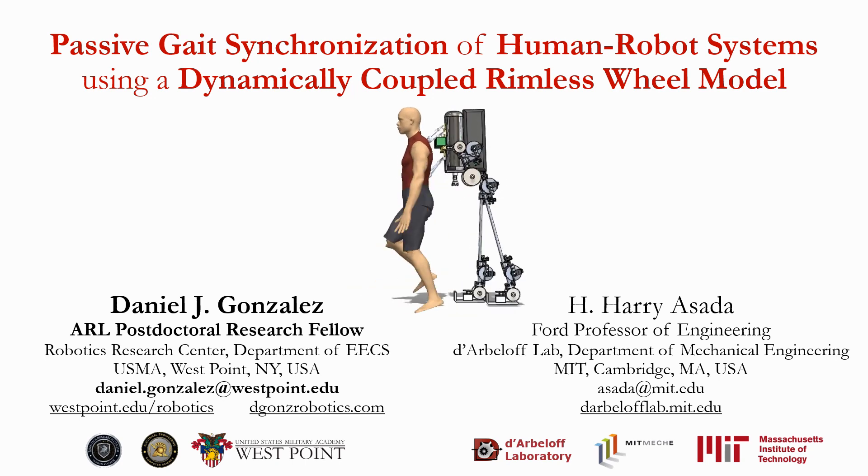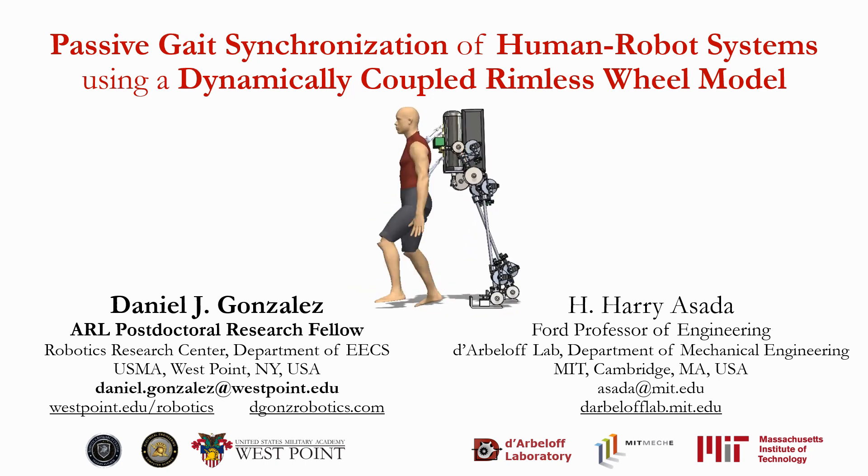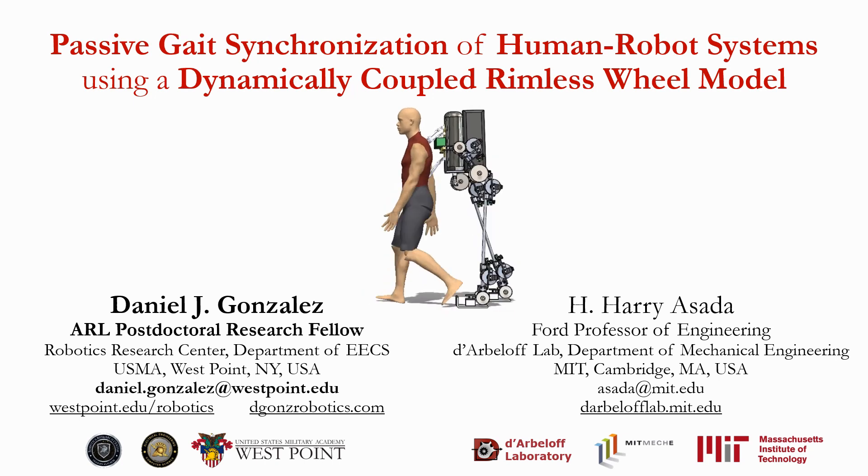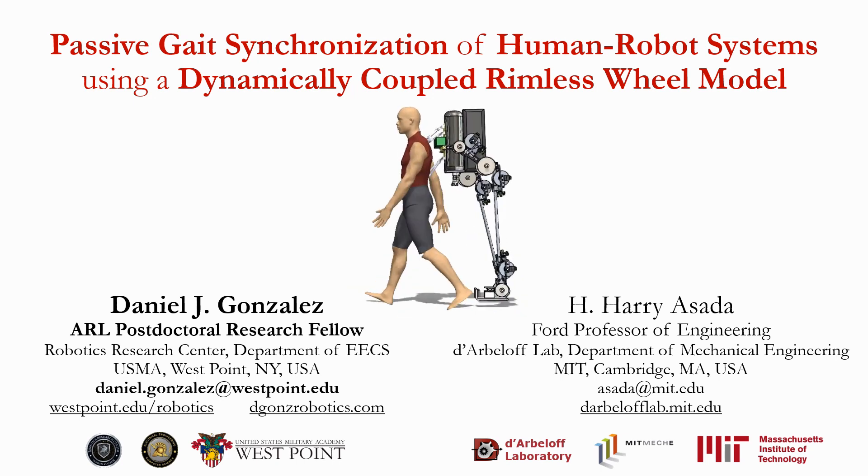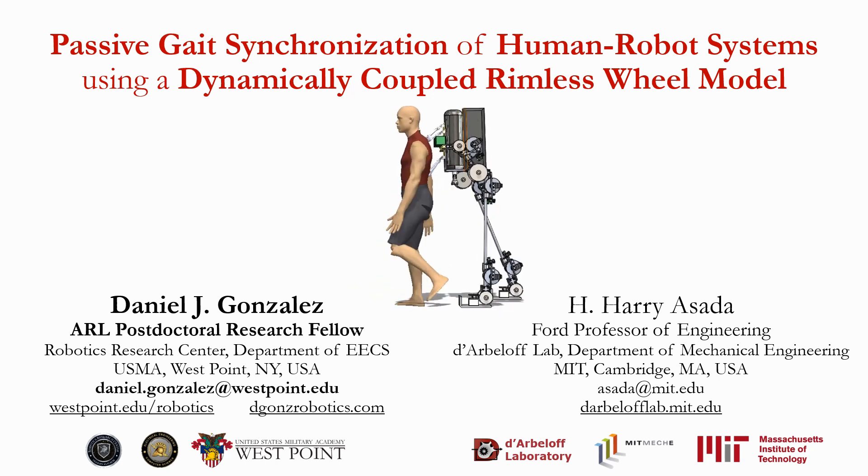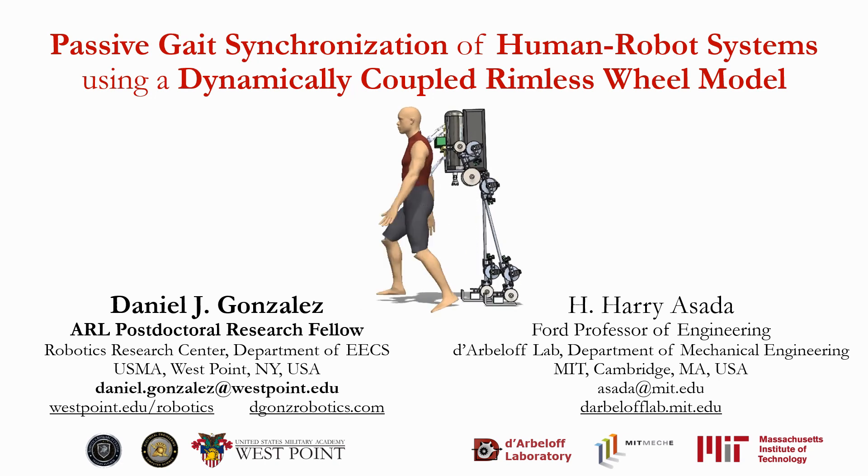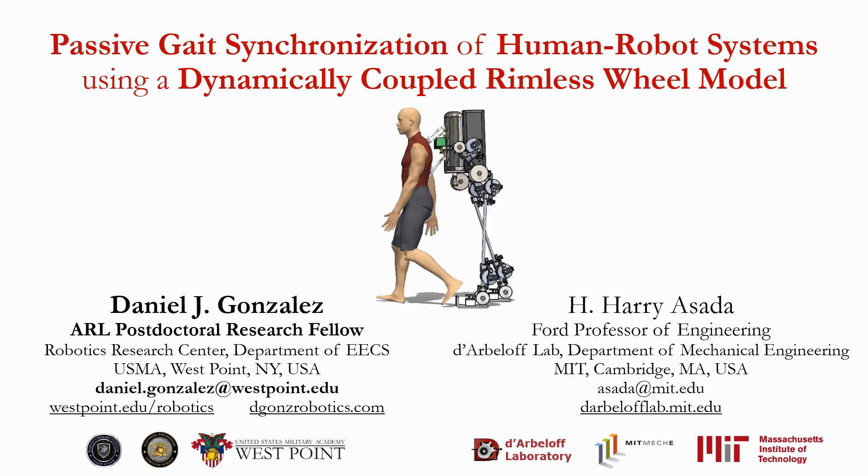What had me curious was how a human and robot that are coupled together, like this guy you see here walking with the robotic backpack, how can they achieve steady locomotion using only passive physical connections? If you design this connection carefully, the human and the robot will naturally fall into a very special gait cycle.